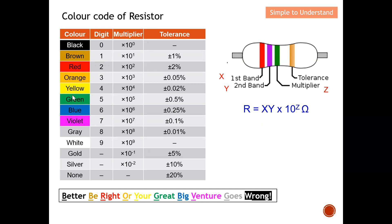If you need to remember all these colors in sequence, there is a simple mnemonic: "Better Be Right Or Your Great Big Venture Goes Wrong." So: black, brown, red, orange, yellow, green, blue, violet, grey, and white. From this mnemonic, you can remember the sequence of the color code of a resistor.